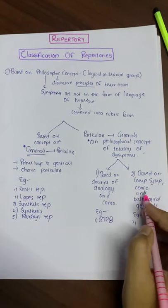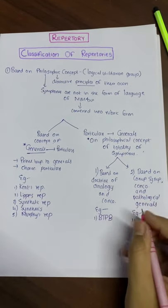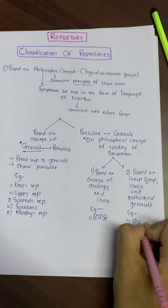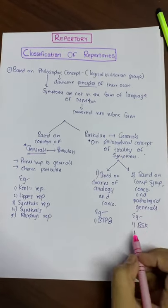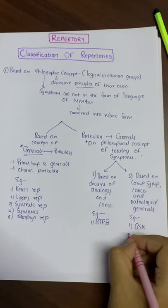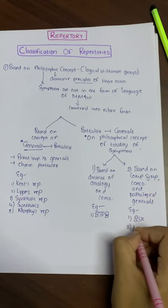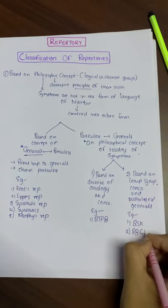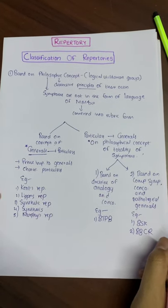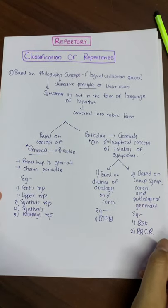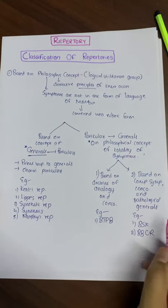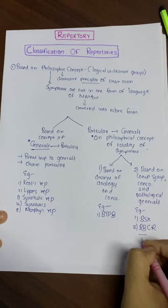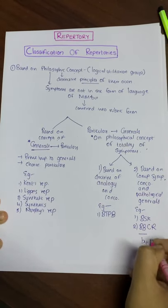The repertory based on complete symptom, concomitant, and pathological general includes BSK — that is Boger's Synoptic Key — and BBCR, that is Boenninghausen's Characteristics and Repertory, both by Boger.